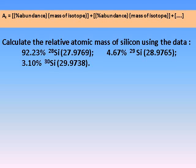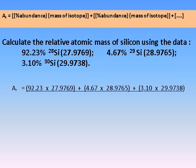In a similar way, we can find the atomic mass of silicon using the data given. Again, we're given abundances and isotopic masses, so we can use the same formula, multiplying the abundance by the relative isotopic mass, adding them all together, and we end up with an answer of 28.1.